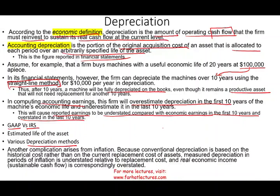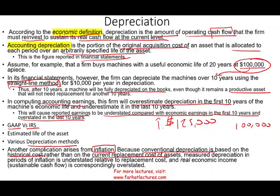Another complication arises when we introduce inflation. Conventional depreciation is based on historical cost — say we paid $100,000 for an asset — but the current replacement cost five years later could be $125,000. You keep depreciating the asset using the $100,000 original cost, so depreciation is understated relative to what it should be in an inflationary environment. From a firm's perspective that's beneficial because less depreciation expense means higher reported earnings.